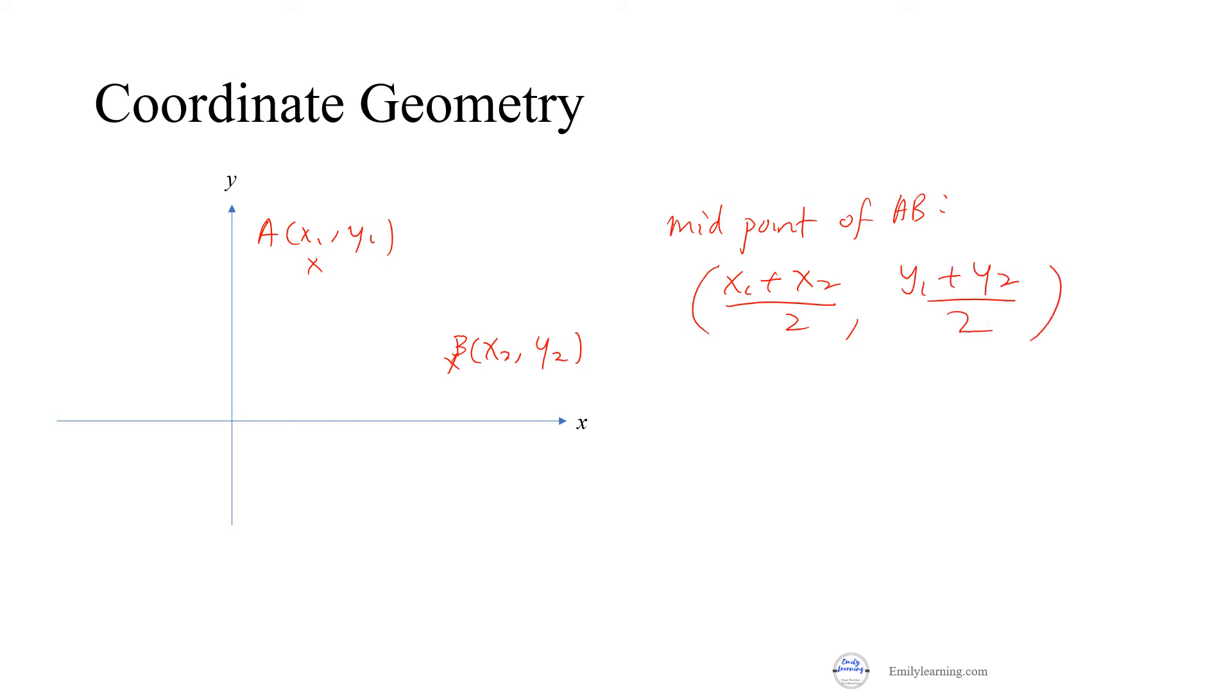This is the midpoint. To find length of AB, I will use this formula, which is the square root of x2 minus x1 squared plus y2 minus y1 squared. So that is how you find the length between two points.